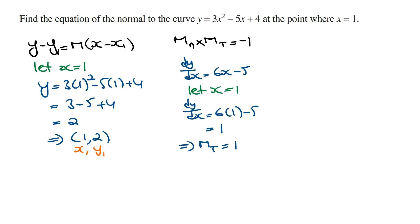Subbing this back into the rule, we are going to get the gradient of the normal line times the gradient of the tangent line, which is equal to 1, is going to equal minus 1. And so this means the gradient of the normal line is equal to minus 1.